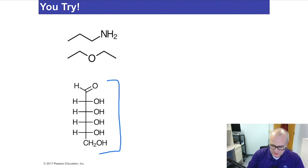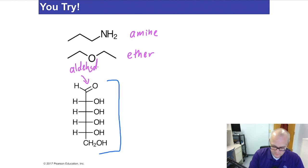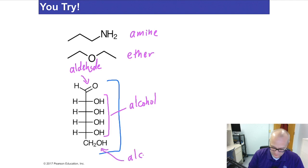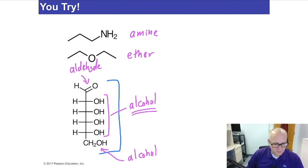I'm just going to write the answers in — if you got anything wrong, go back and review. That's an amine. This is an ether. That right there is aldehyde. All of those are alcohol. And that is also alcohol. I hope I didn't trick anyone with four alcohols in a row plus one at the very bottom.